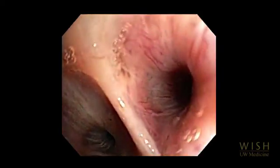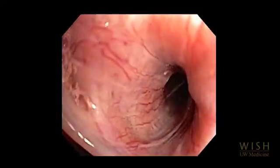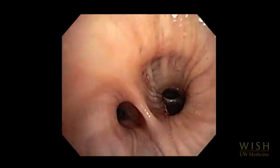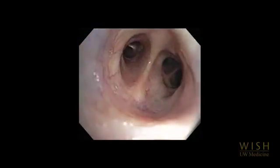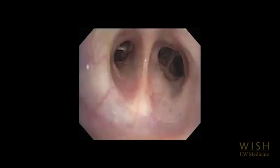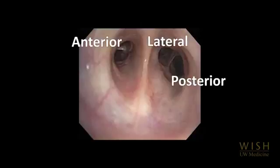The right middle lobe has two segments, medial and lateral. We then inspect the superior segment and then the medial basal segment. Continuing in a different patient, the right lower lobe bronchus divides into the remaining basilar segmental bronchi: anterior, lateral and posterior. These are typically in a row when the bronchoscope is held in anterior-posterior orientation within the right lower lobe bronchus, forming the familiar ALP mnemonic.